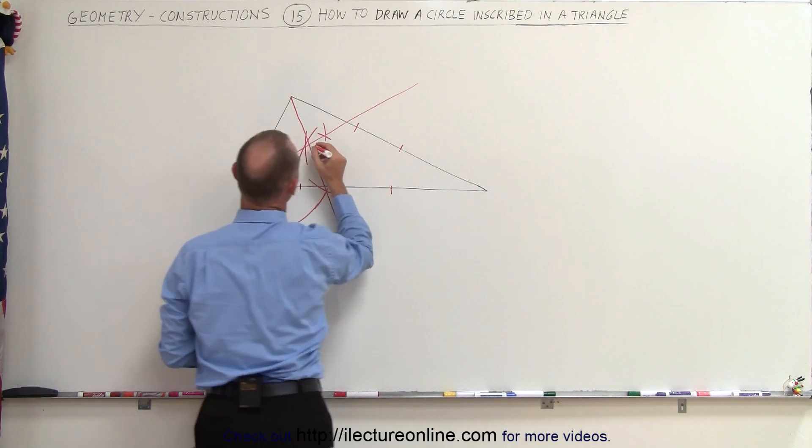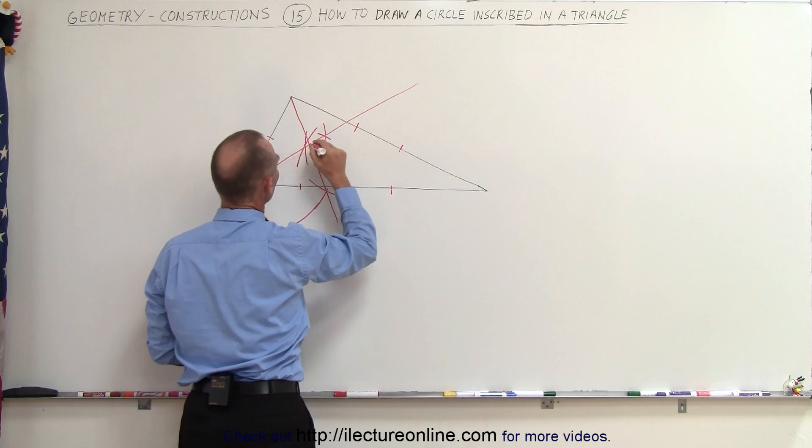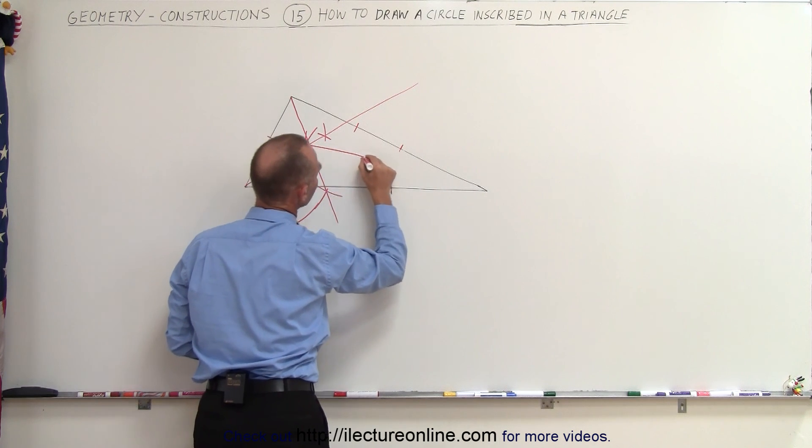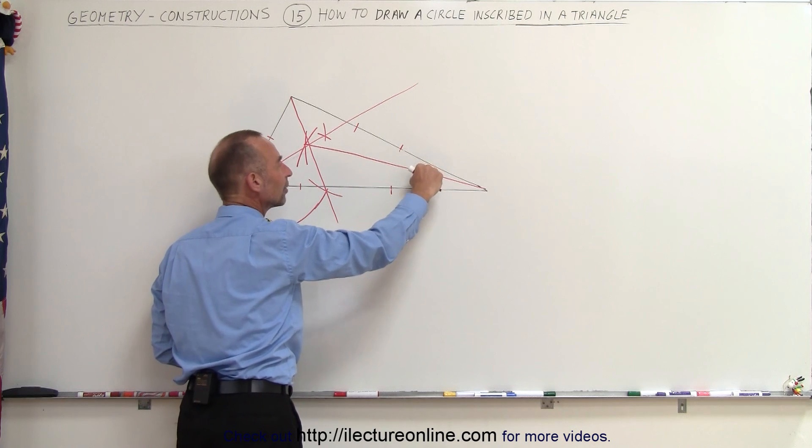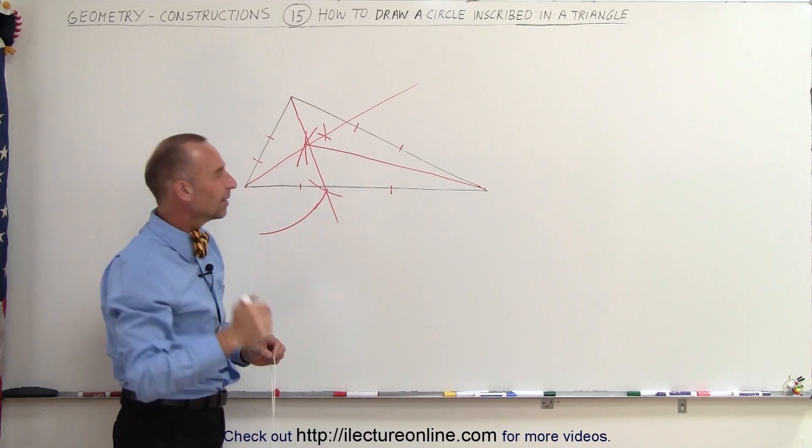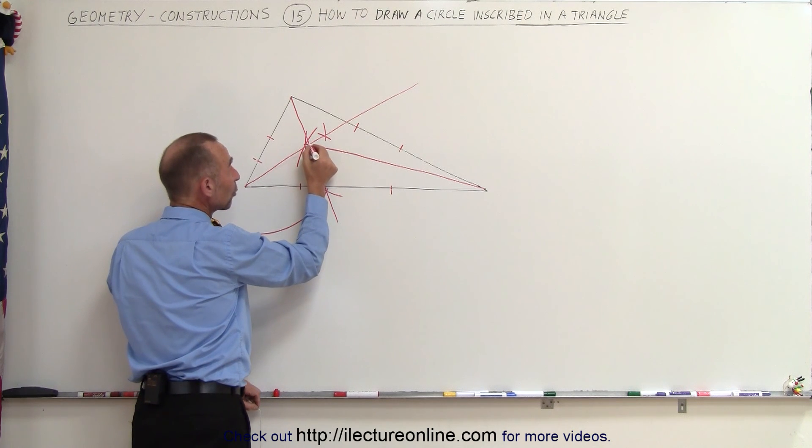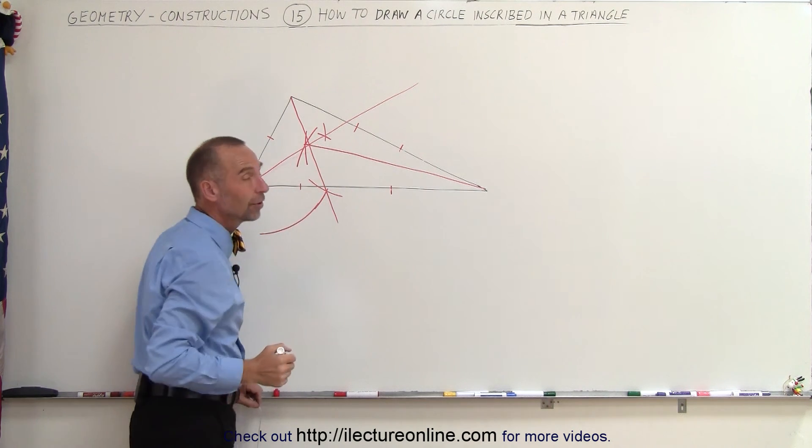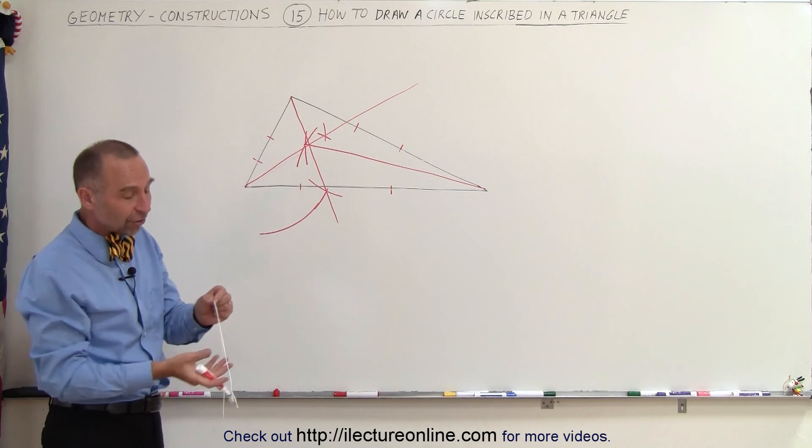And again, where those two cross right here, if I then connect this corner to that point right there, there we go, then I divide this angle into exactly two equal angles. Got a little off there, but I'm close enough. Now notice that those three lines cross each other right here at this point. That would be the center of the triangle, which now also becomes the center of the circle.